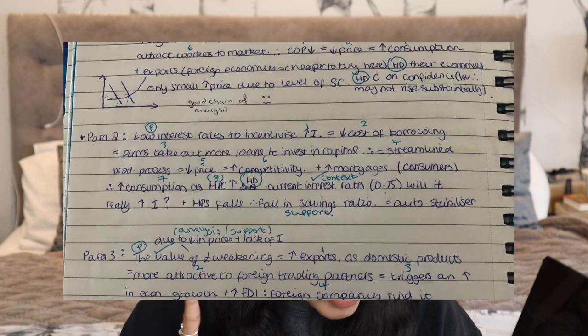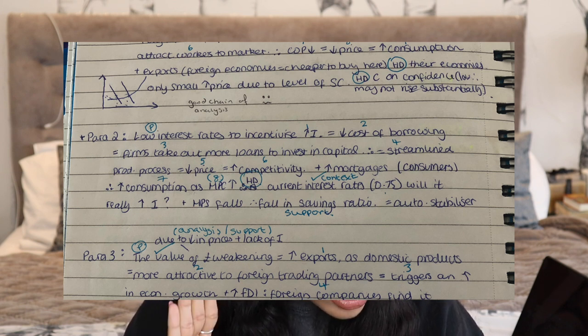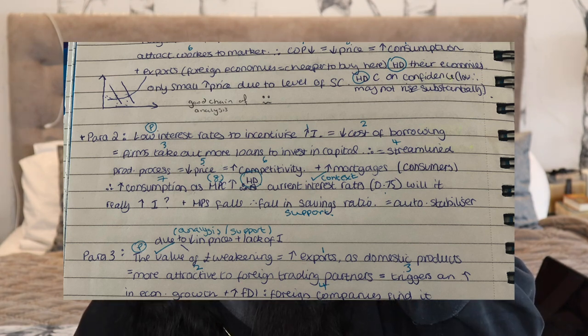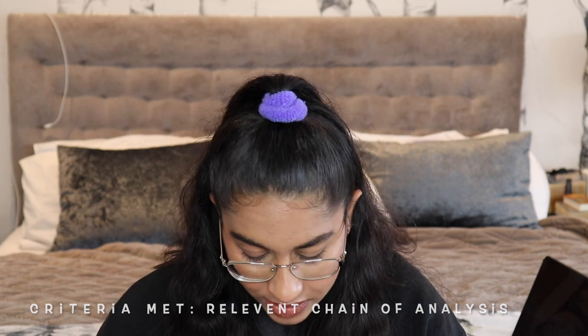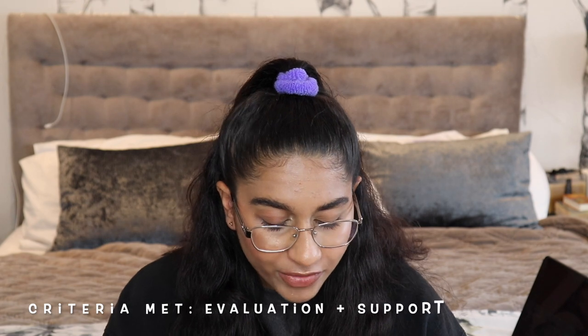Leading on from this I had two 'however it depends on' options since the plan was done in class with no time pressure. In the exam you'll only have time for one. Paragraph two: lower interest rates incentivize an increase in investment, leading to lower cost of borrowing, firms taking out more loans to invest in capital, streamlined production, a decrease in price, and an increase in marginal propensity to consume — that's eight chains. The 'however' evaluation was that the fall in the savings ratio as an automatic stabilizer raises the question of whether investment will really increase.